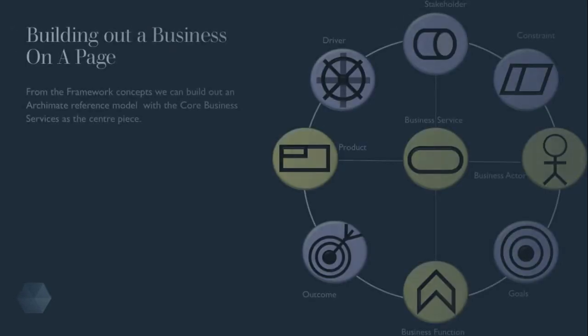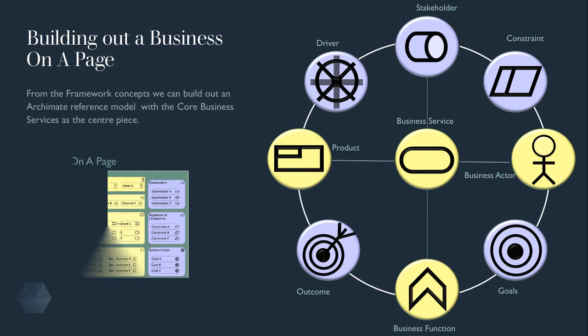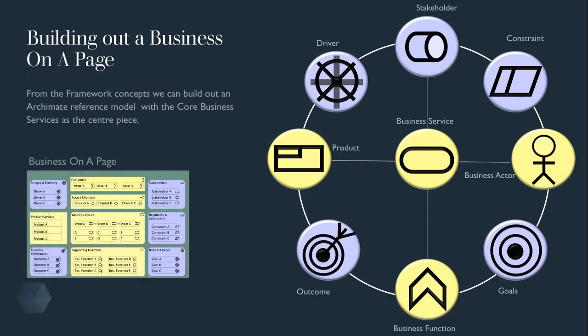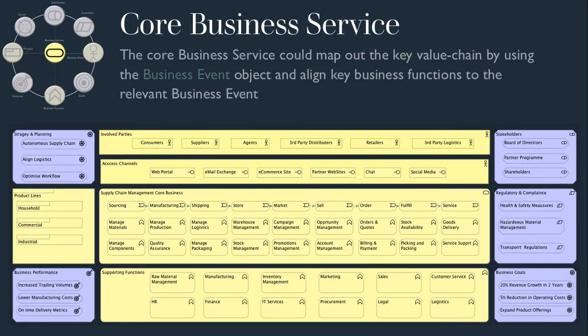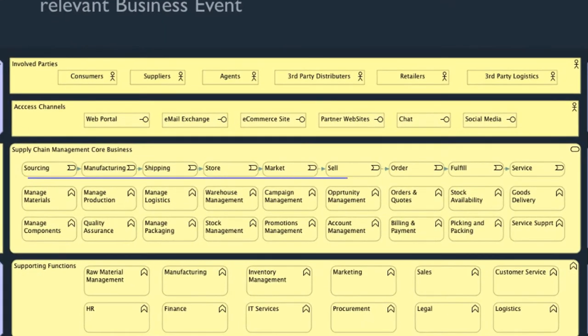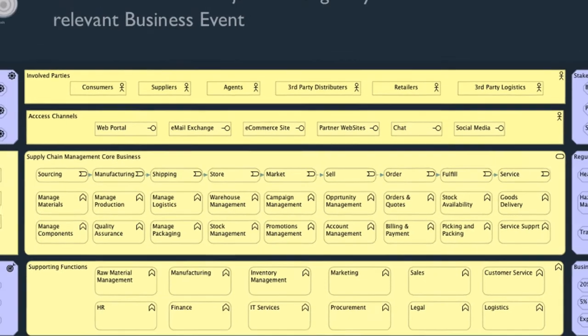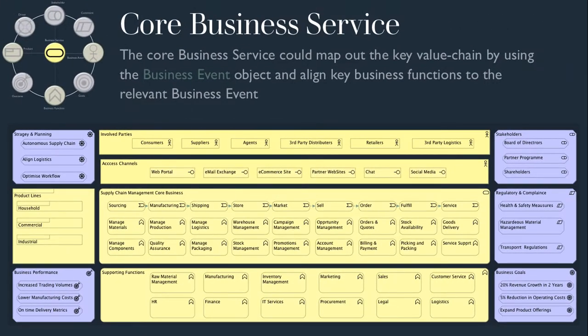From the framework concepts, we can build out an ArchiMate reference model with the core business services as a centerpiece. The business architecture should be in a language that is understood by the business. What works well is listing the key value chain or high-level process flow of the business and then aligning some of the key business functions to the relevant business event. This also comes in handy when overlaying application components, which we'll look at in the next session. Naturally, there will be more business functions than listed here, but hopefully it provides enough for an example.